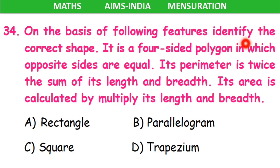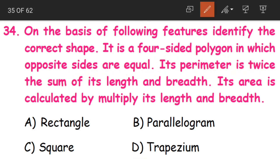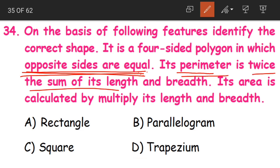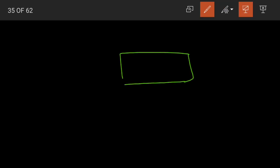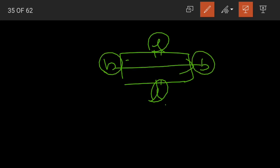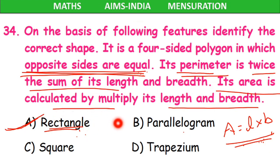Question 34: again on the basis of the following features, identify the correct shape. It is a four-sided polygon in which opposite sides are equal. The perimeter is twice the sum of its length and breadth, and area is calculated by multiplying its length and breadth. Area is equal to length into breadth — we use this formula to calculate the area of a rectangle. In a rectangle, opposite sides are equal: the two lengths are equal and the two breadths are equal. So option A, rectangle, becomes our correct answer.